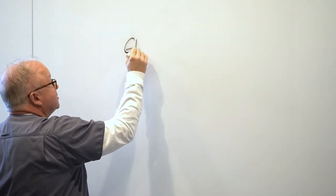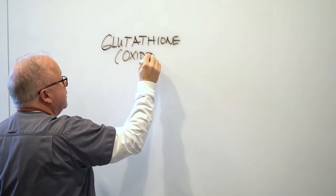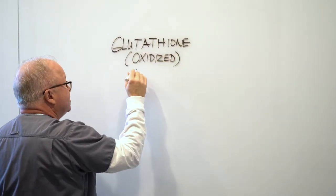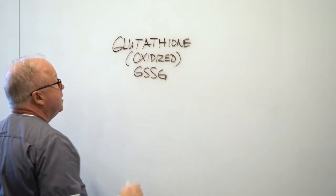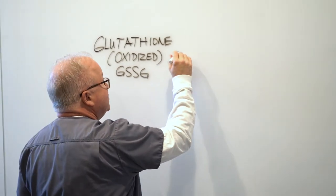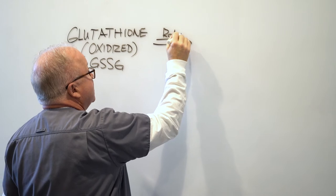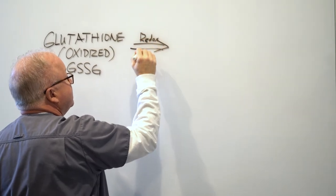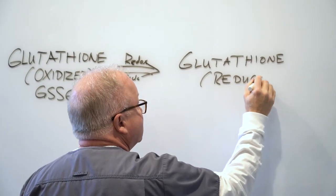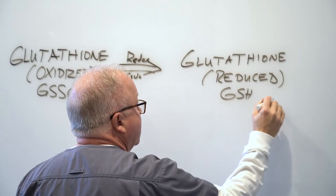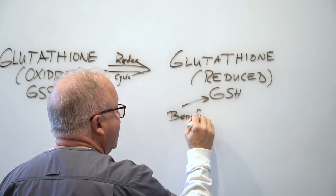Glutathione is available in two forms. Hopefully this will be sped up. This is the oxidized form which is pretty much useless, GSSG. If you take it through the redox cycle as it's called, where it is reduced back down to GSH, this is the beneficial one. This is the glutathione that you need.